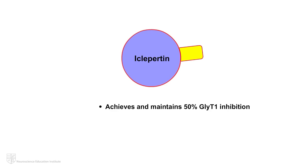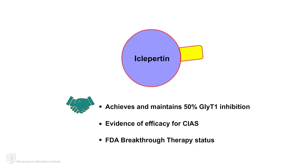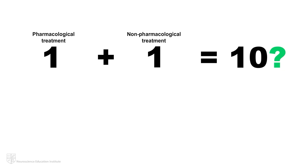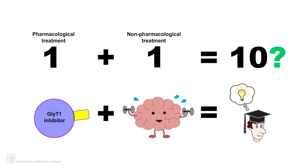One such potent and selective GlyT1 inhibitor, iclopertin, has been shown to achieve and maintain 50% blockade of GlyT1 and has received FDA breakthrough therapy status due to its pro-cognitive benefits in patients with schizophrenia. As with many treatment strategies in various psychiatric conditions, the combination of pharmacological and behavioral therapies may be the most effective approach when it comes to CIAS. Indeed, there are ongoing trials combining GlyT1 inhibition with cognitive training underway.